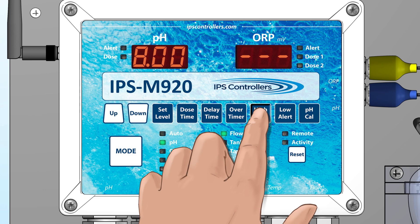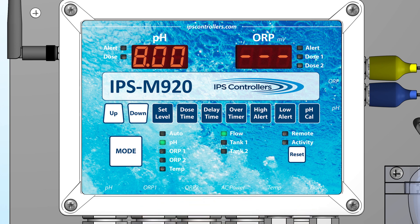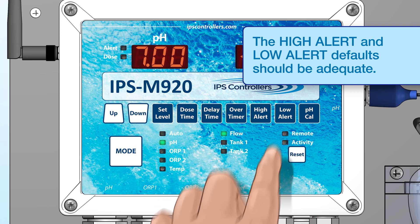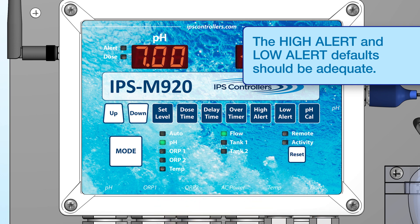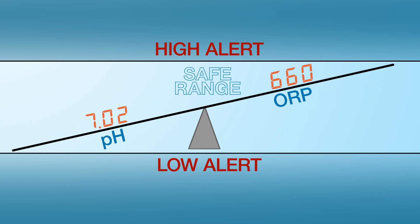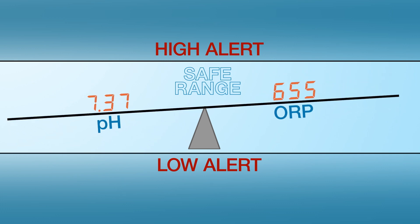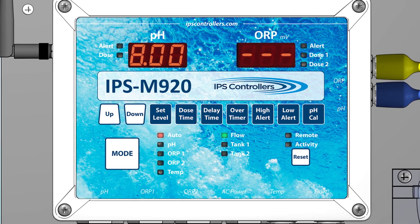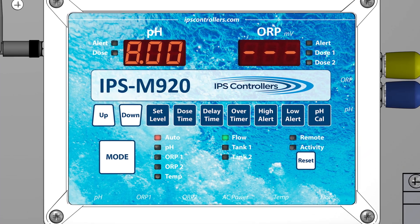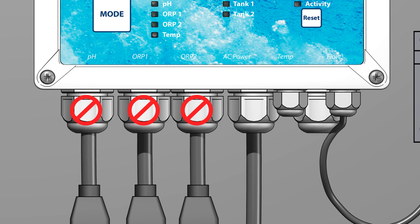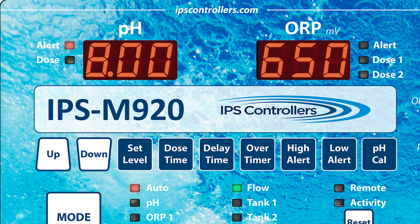The High Alert tells you that your pH has risen to or above the High Alert selected level. The Low Alert tells you that the pH has reached or dipped below the Low Alert selected level. Because pH affects ORP levels, these alert settings create a safe pH range that prevents over-sanitizing. If the pH level strays outside of the pH range settings for 10 minutes, an alert will be triggered and dose outputs will be disabled. The alert will automatically turn off if the pH reading returns within limits for one continuous minute.